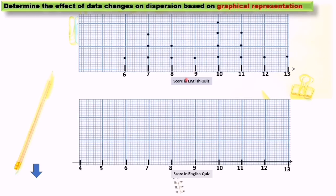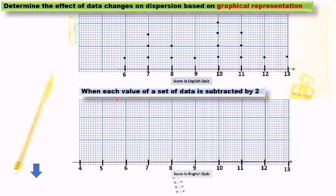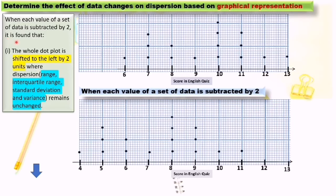This dot plot graph shows the score of students in an English quiz. When each value of a set of data is subtracted by two, it is found that the whole dot plot is shifted to the left by two units, where dispersion, range, interquartile range, standard deviation, and variance remain unchanged.